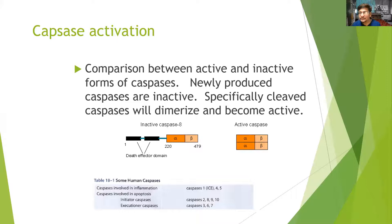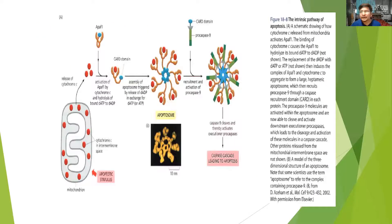Two processes are required for caspase activation: one is cleavage and another is dimerization. In humans, the caspases involved in inflammation are caspase-1, -4, and -5. The initiator caspases involved in apoptosis are caspase-2, -8, -9, and -10, and the executioner or effector caspases are caspase-3, -6, and -7.